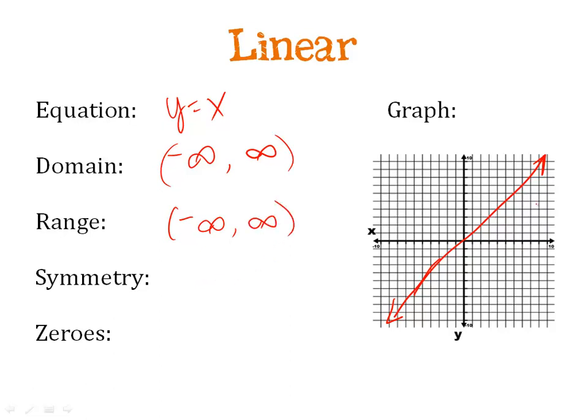The symmetry, where does it mirror image? How can I fold it so the mirror images lay on top of one another? I'd have to fold it this way across the y and across the x, then they would match. That means it's origin symmetry. Zeros, meaning where does it cross the x-axis at the point zero, zero.